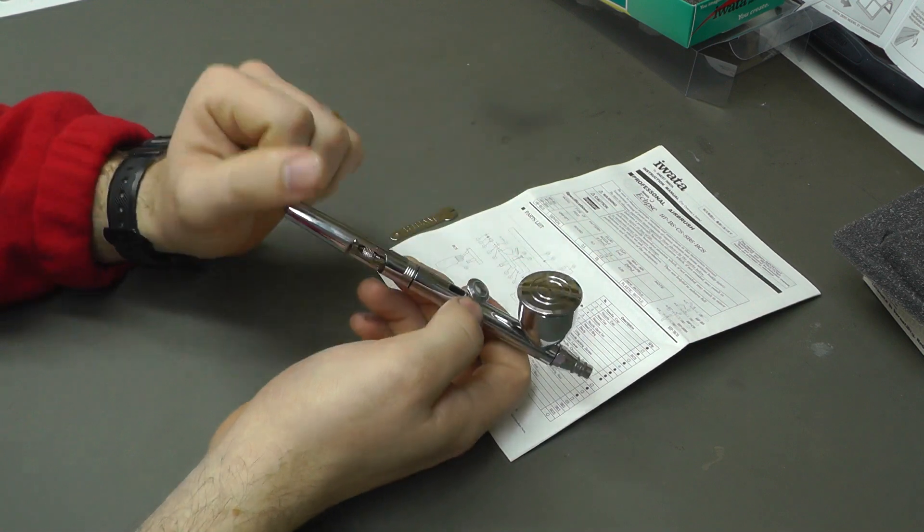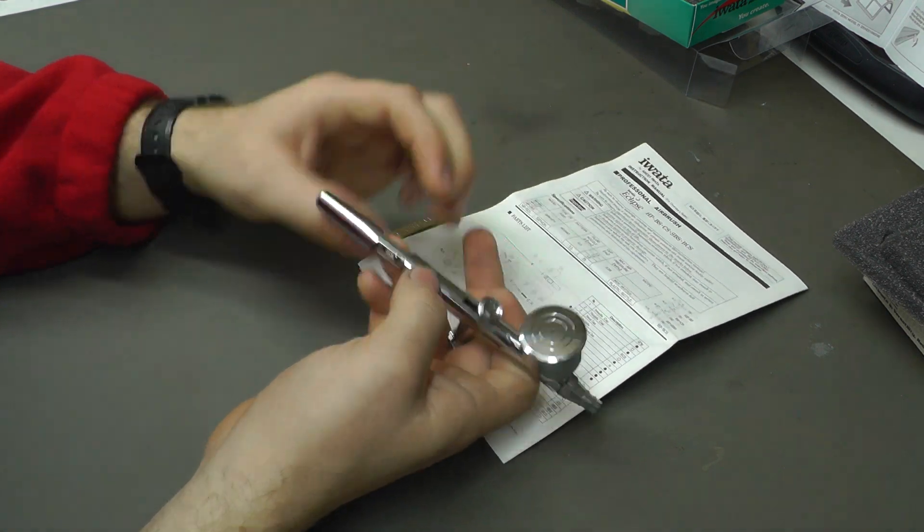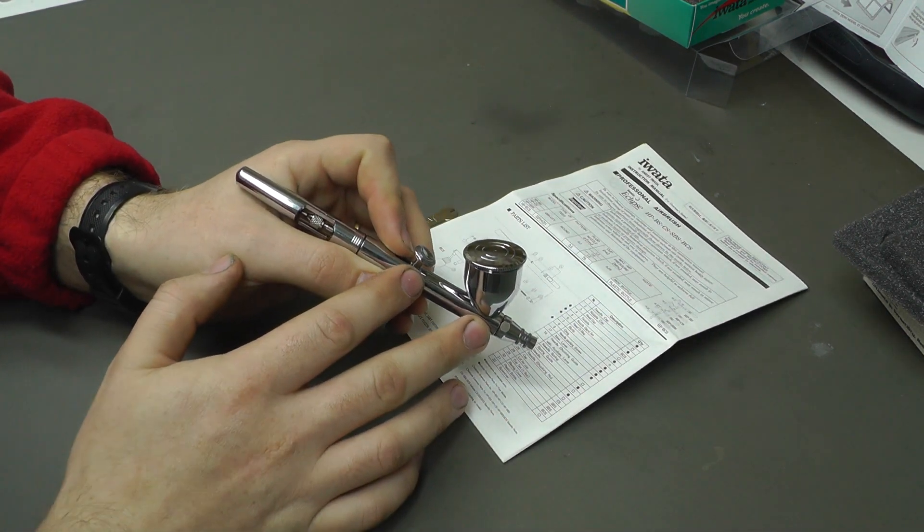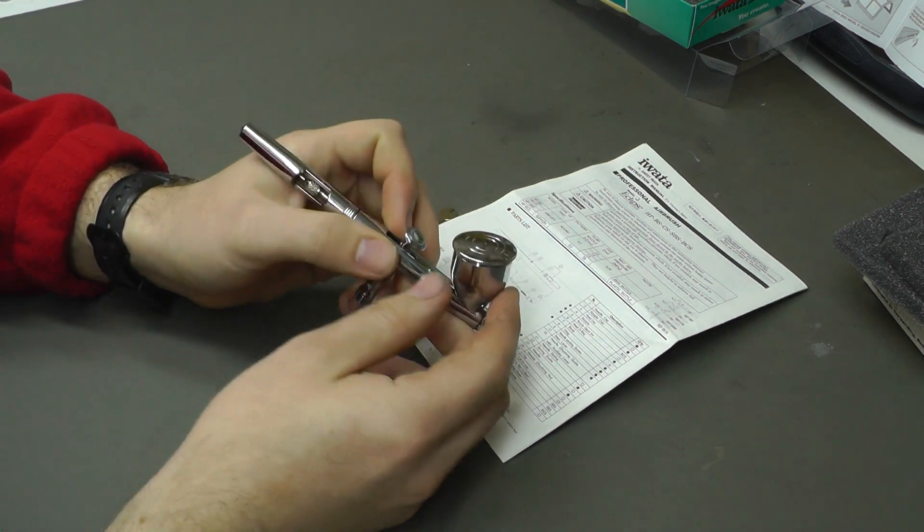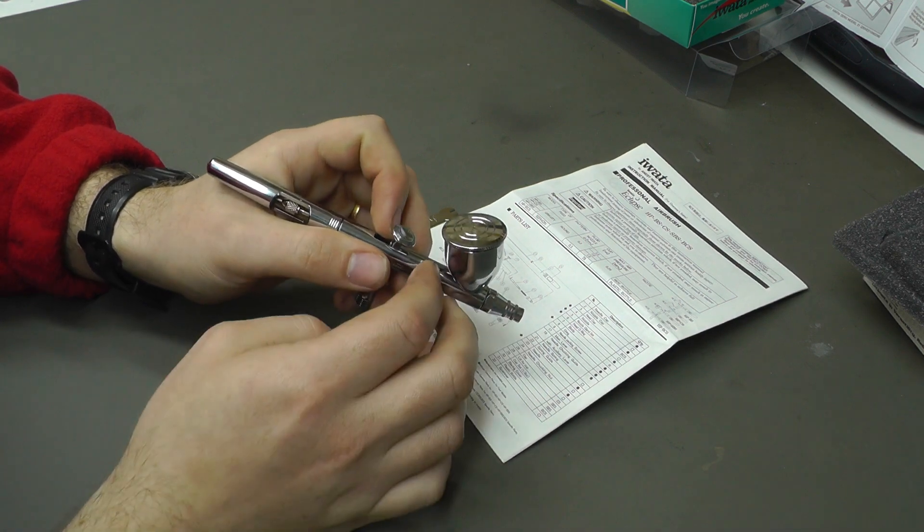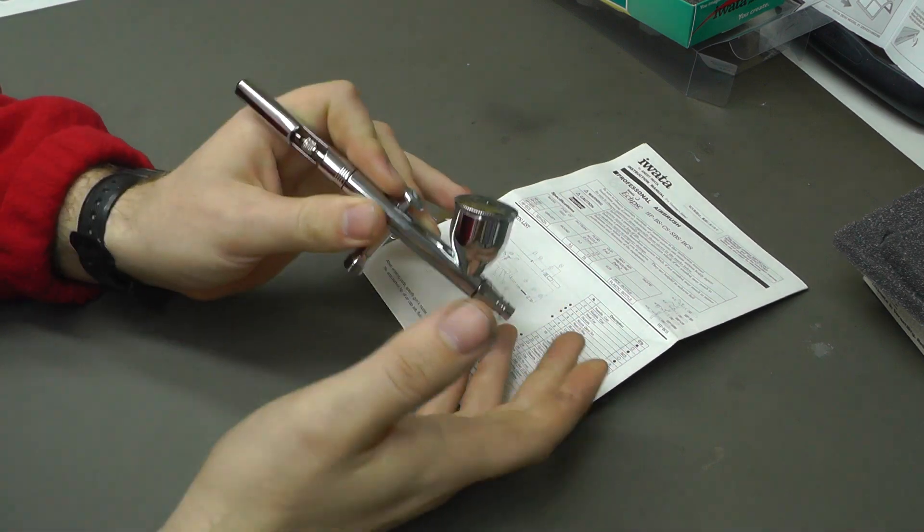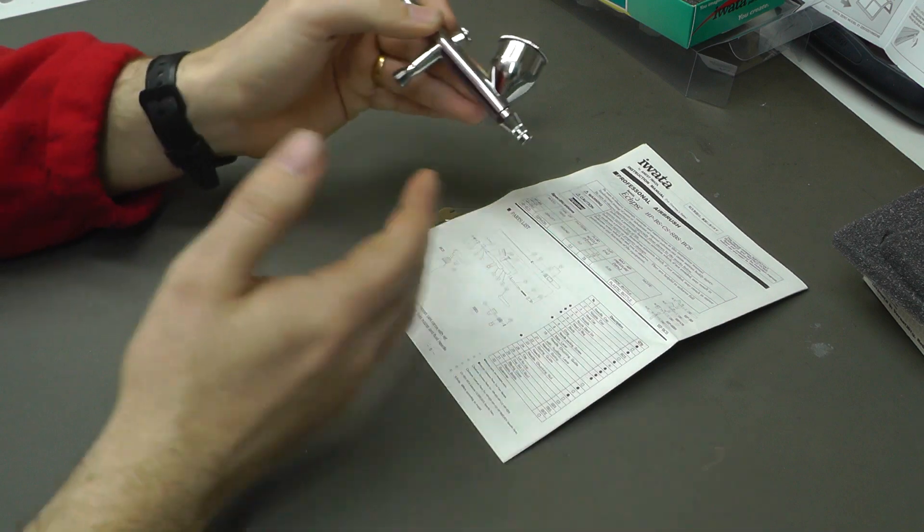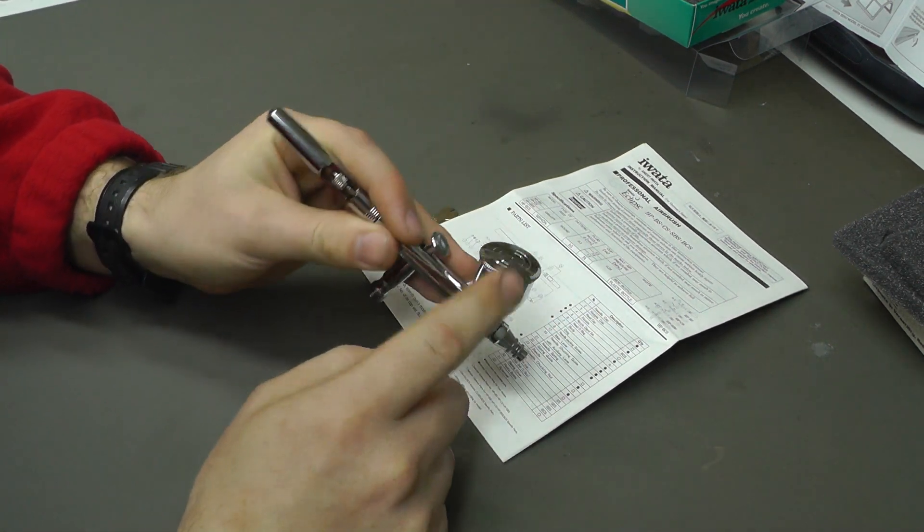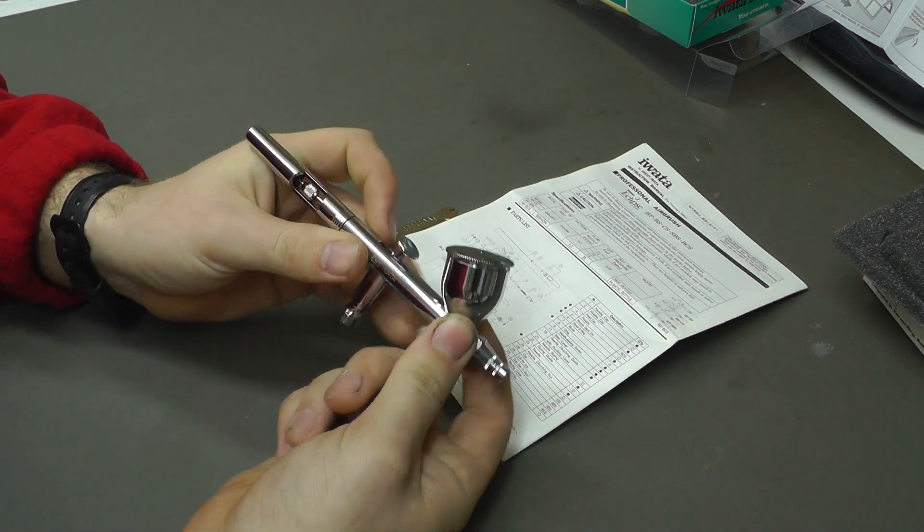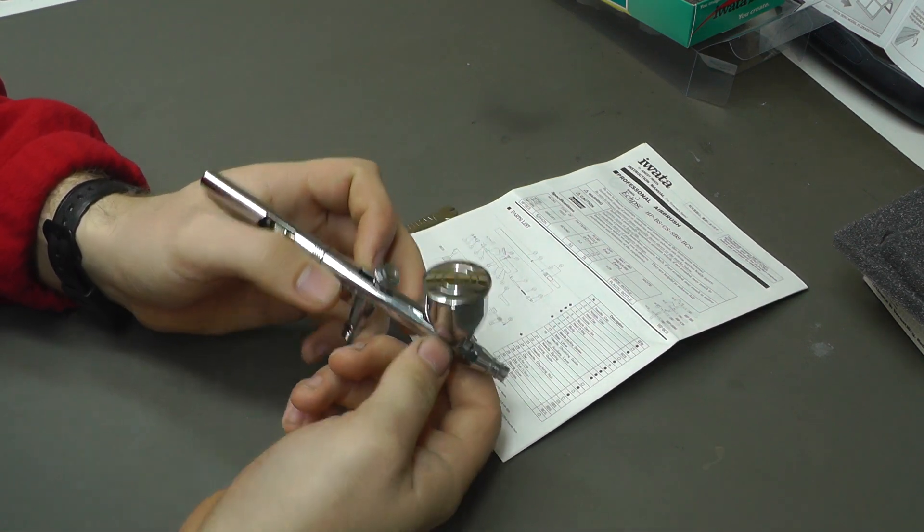The Eclipse range does have another, has four airbrushes altogether. You do have the BS version, which is basically exactly the same as this, but it has a 1.5 mil cup. So a nicer, smaller cup, just so you can get into harder to reach places. It does have a 0.3 needle in it. So it's sort of like a nice sort of standard needle size to kind of be able to do fine stuff as well as doing kind of good coverage as well. This is the CS version, which has the bigger 7 mil cup size, which is kind of like a nice standard size for all sorts of modelling really. Also with the 0.3 needle.